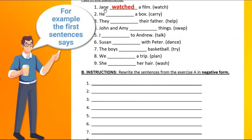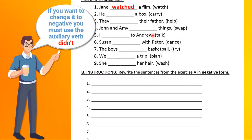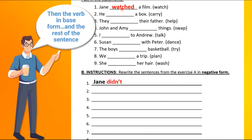the first sentence says Jane watched a film. If you want to change it to negative, you must use the auxiliary didn't. So Jane didn't, and the verb in base form, watch.